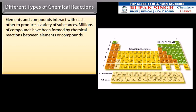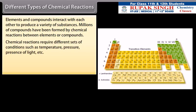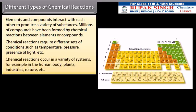Different types of chemical reactions: Elements and compounds interact with each other to produce a variety of substances. Millions of compounds have been formed by chemical reactions between elements or compounds. Chemical reactions require different sets of conditions such as temperature, pressure, presence of light, etc.